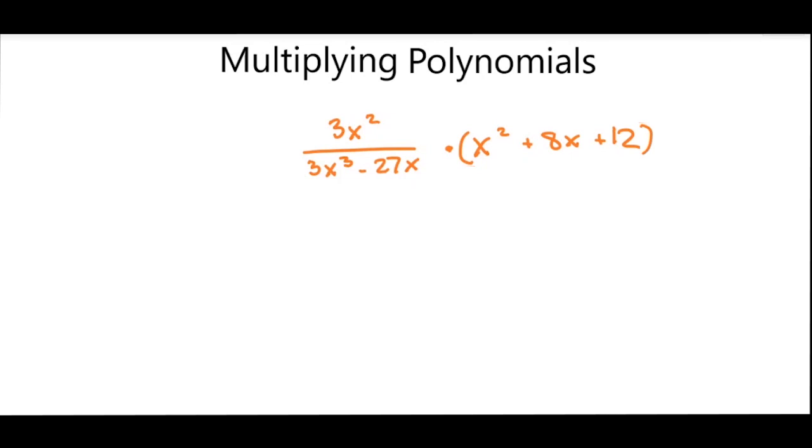Hey guys, today we are multiplying polynomials. Here I have 3x squared over 3x to the third minus 27x times x squared plus 8x plus 12.